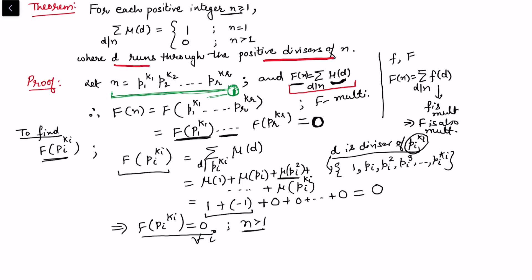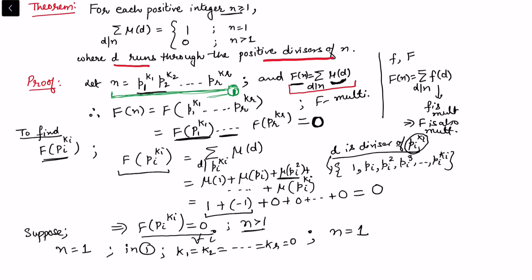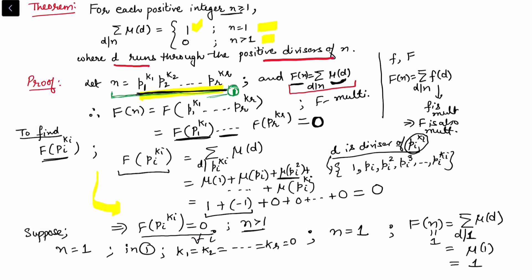When n = 1, in the prime factorization all exponents k₁, k₂, ... are 0, so F(1) = Σ_{d|1} μ(d) = μ(1) = 1. When n > 1 there is a prime factorization and, following the proof above, this value comes out as 0. So the result holds: Σ_{d|n} μ(d) = 1 if n = 1, and 0 if n > 1.